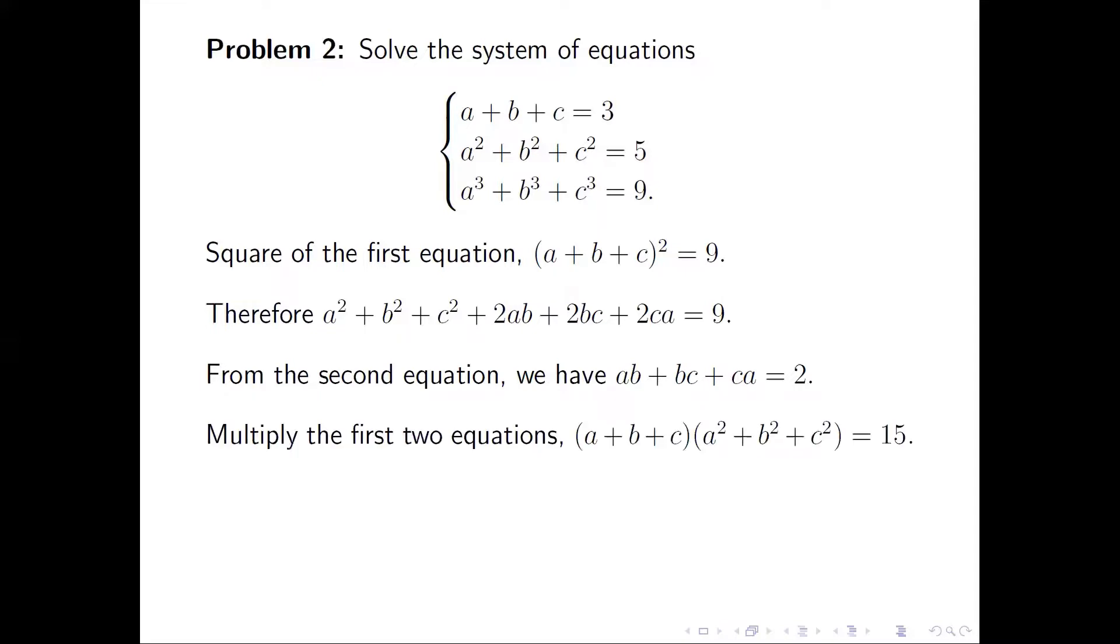The third one is slightly tricky. We multiply the first two equations: (A + B + C)(A² + B² + C²) = 3 × 5 = 15. Expanding the left-hand side, three terms times three terms gives nine terms. The first three terms are A³ + B³ + C³. For the remaining six terms, we can separate them into three groups.